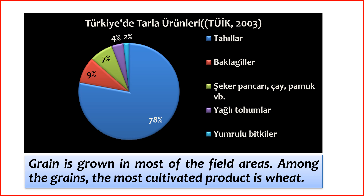Fruit production increased in 2022 compared to the previous year. The production amount of fruits, beverages, and spice plants increased by 7.7%, reaching approximately 26.8 million tons. There was an increase of 7.2% in apples, 13.5% in grapes, 13% in total peaches and nectarines, 4.9% in plums, 8.8% in strawberries, and 71.2% in olives. Fig production increased by 9.4%, and banana production increased by 12.9%. Among citrus fruits, tangerine production increased by 2.5%, while orange production decreased by 24.1%, and lemon production by 14.6%. Among nuts, hazelnut production increased by 11.8%, and pistachio production increased by 100.5%.